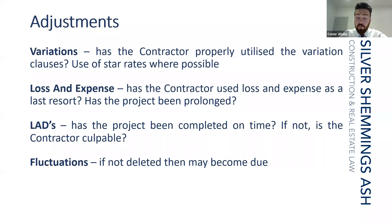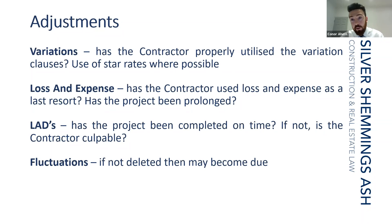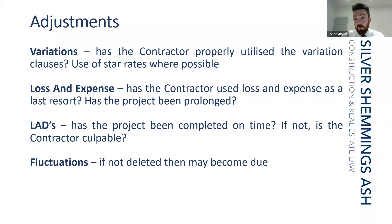Fluctuations: these are struck out in most contracts now, as most contracts are lump sum and don't cater for fluctuations, so the rates for the duration of the work are deemed to be fixed. Not to be confused with inflation — if inflation in respect of a substantially delayed project creates grounds for recovery, that can apply. But generally the fluctuation clauses deal with fluctuations that occur to your rates during the course of the work. Just be familiar with what the position is under the contract.